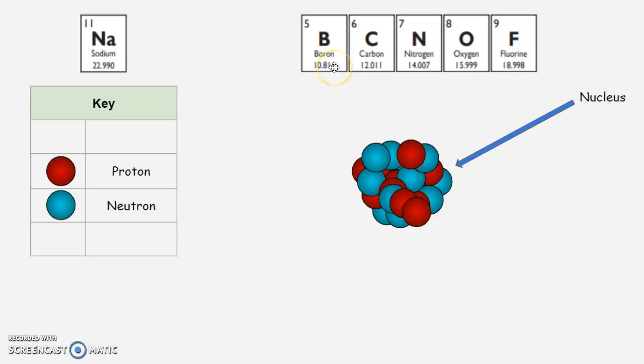Well, we have to take the larger of the two numbers and round it. So 10.811 would round up to 11, and then you subtract it from the number of protons. So 11 minus 5 is 6. So boron would have 6 neutrons.